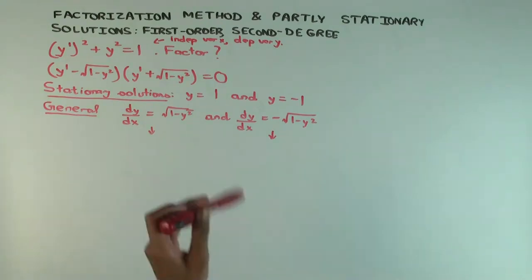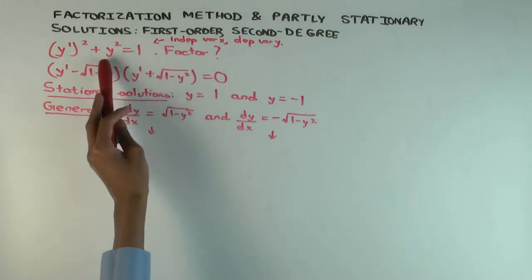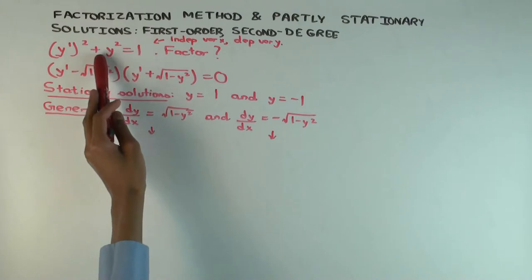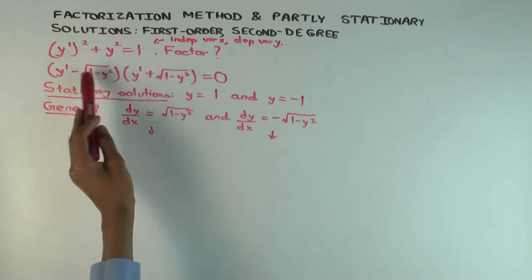Let's actually solve it. We factor it. You can write this as Y prime squared plus Y squared minus 1 equals 0. Then you factor it.